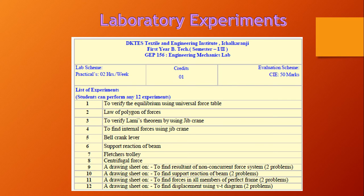The 12 experiments are: first, to verify the equilibrium using universal force table; second, laws of polygonal forces; third, to verify Lamy's theorem using a jib crane; fourth, to find internal forces using a jib crane; fifth, bell crank lever; sixth, support reaction of beam; seventh, the pleasure trolley; eighth, centrifugal force; and thereafter experiments 9 to 12. There are also drawing sheets associated with this teaching scheme.